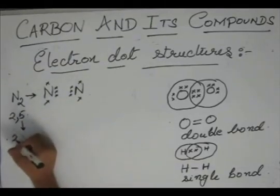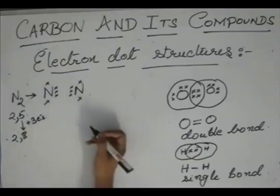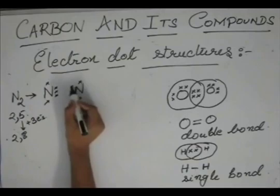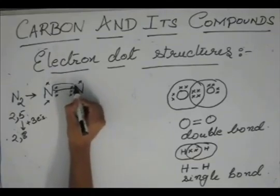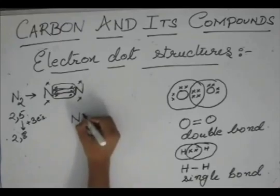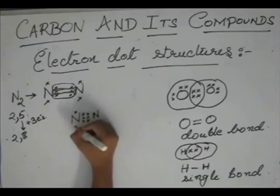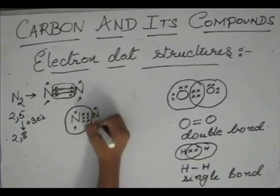So to make it 2, 8, it needs another 3 electrons. So it has to share 3 electrons in order to get 3 electrons from the other nitrogen. So this one is shared, this one is shared, this one is also shared. So it actually becomes like this.